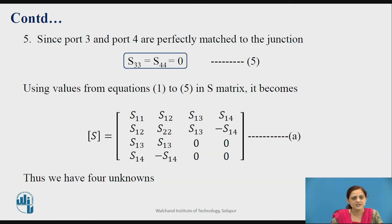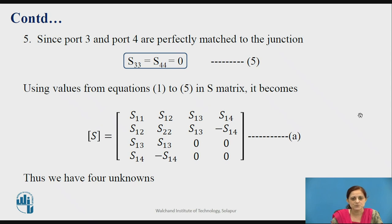The next property: port 3 and port 4 are perfectly matched to the junction, so S33 equal to S44 equal to 0. That is, if the input is applied to port 3, the output at the same port is equal to 0. Using all these values for the scattering coefficients, you can rewrite the matrix. You are getting the matrix for the Magic T, where the lower rectangular block becomes equal to 0. Thus you can observe this matrix has 4 unknown values which need to be determined.